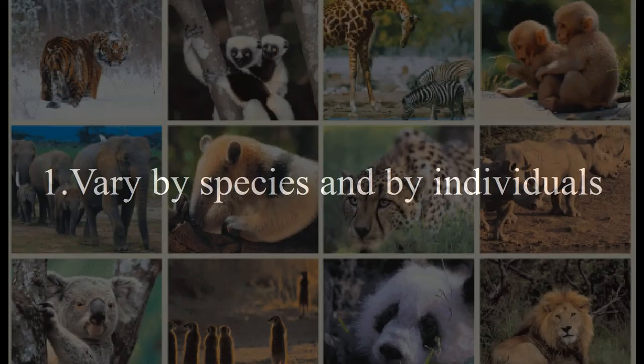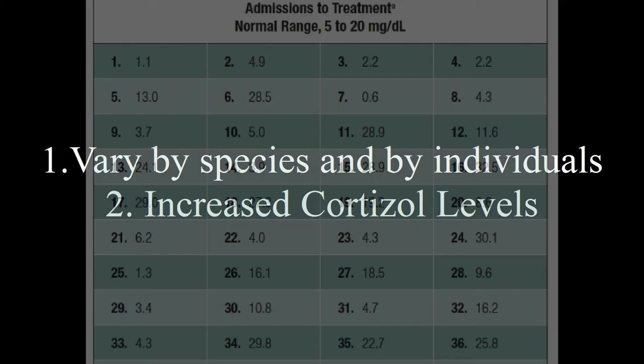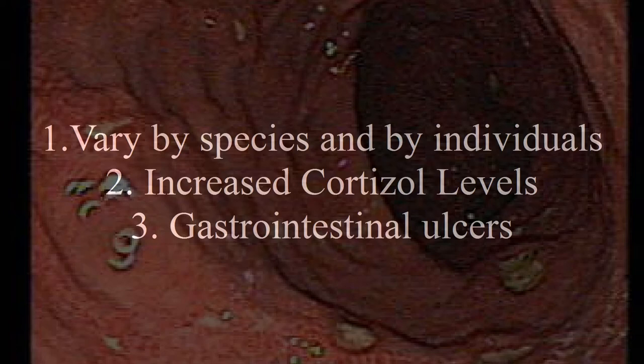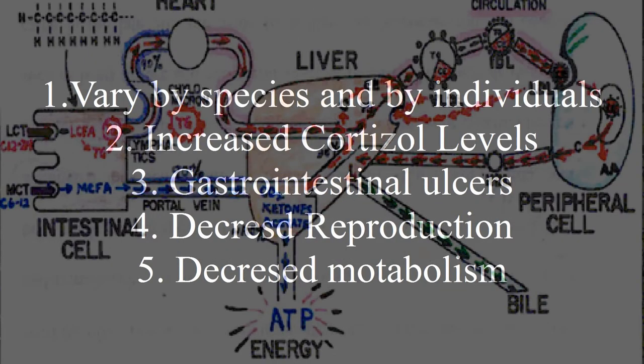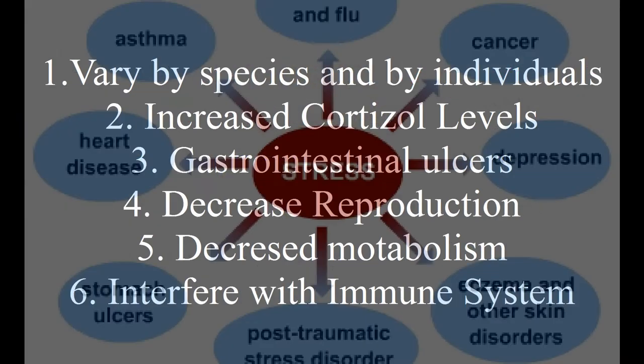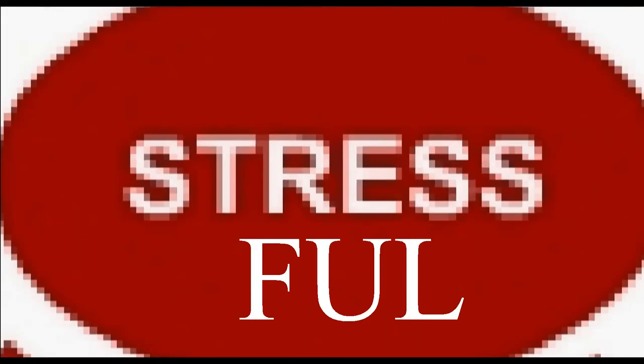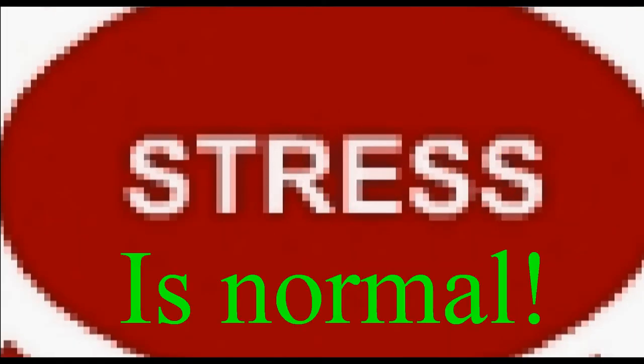Reactions vary by species and by individuals. Increased cortisol levels, gastrointestinal ulcers, decreased reproduction, decreased metabolism, and interference with the immune system are all stress reactions. Stress is normal, but too much stress is not normal.